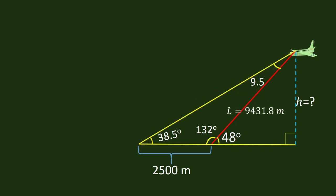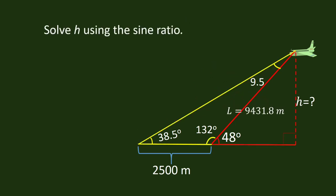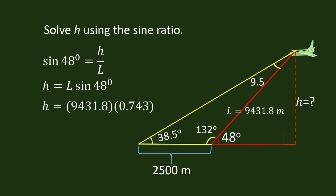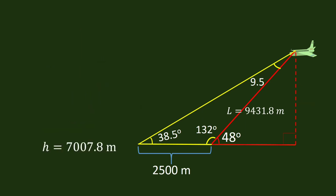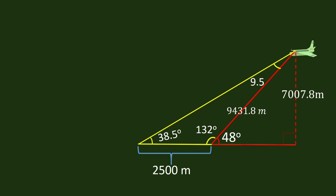Since we know L, we can find H. Going back to our previous illustration, we have sine 48 degrees is equal to H over L, and H is equal to L times sine 48 degrees. Substituting L, we get H is equal to 7,007.8 meters. This is the height of the airplane from the ground. We solved the problem.